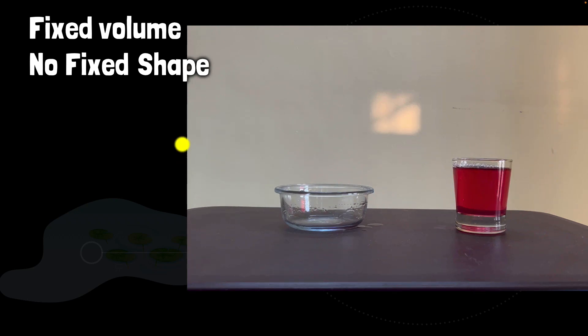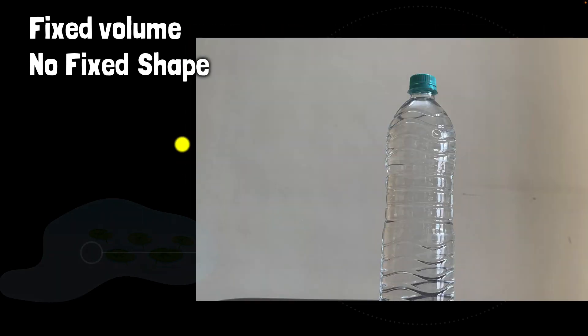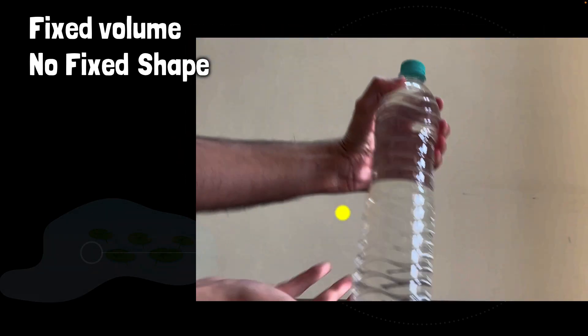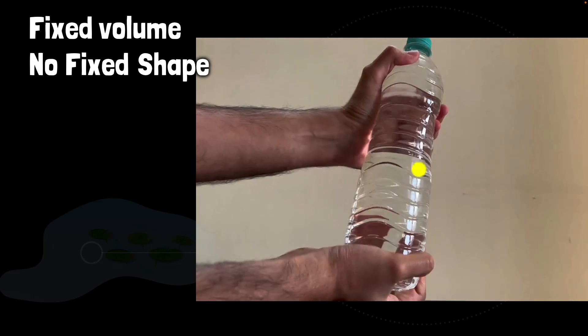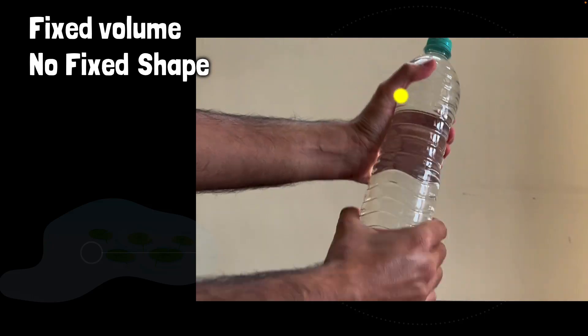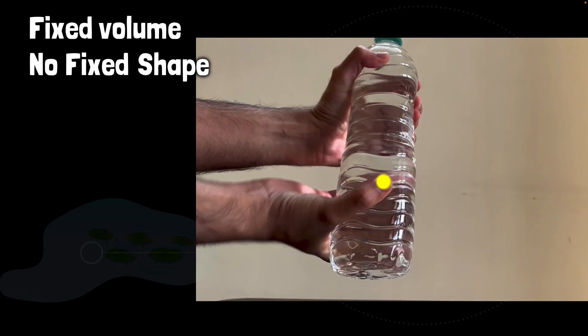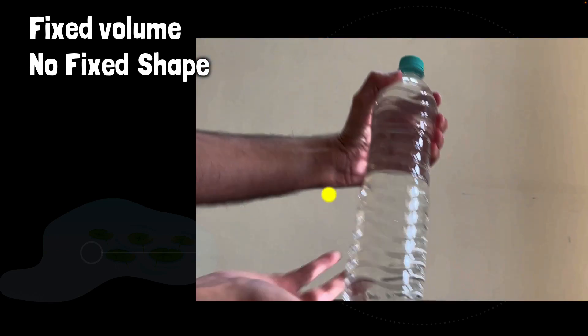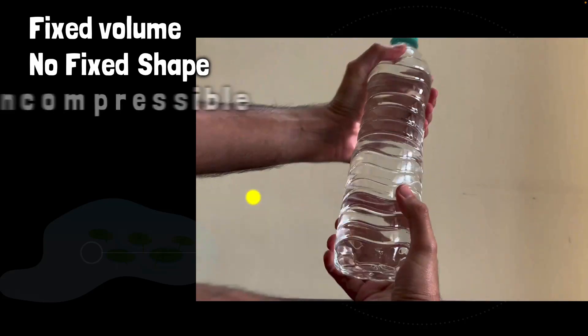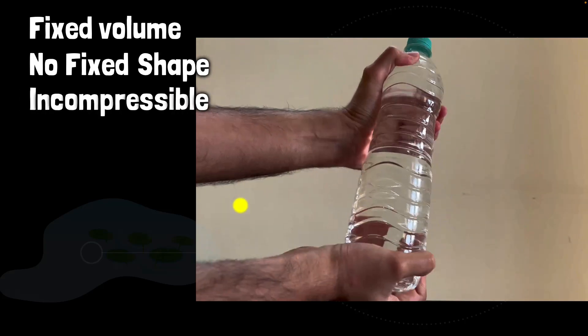But what about its compressibility? Can you squish it? Well, let's see. Fill a bottle completely with water and try to squish it. You will see it's very hard to do that. I mean, over here, I can kind of do it because there are some air pockets over here, so it squishes a little bit, but if it was completely filled with water, no air pockets, it'd be very hard to do that. That means it is incompressible. Liquids are also incompressible.